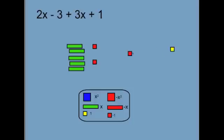So we can eliminate them, get them out of the way. And that leaves us with 5x is here and minus 2 there. So that tells us that 2x minus 3 plus 3x plus 1 will give us 5x minus 2.